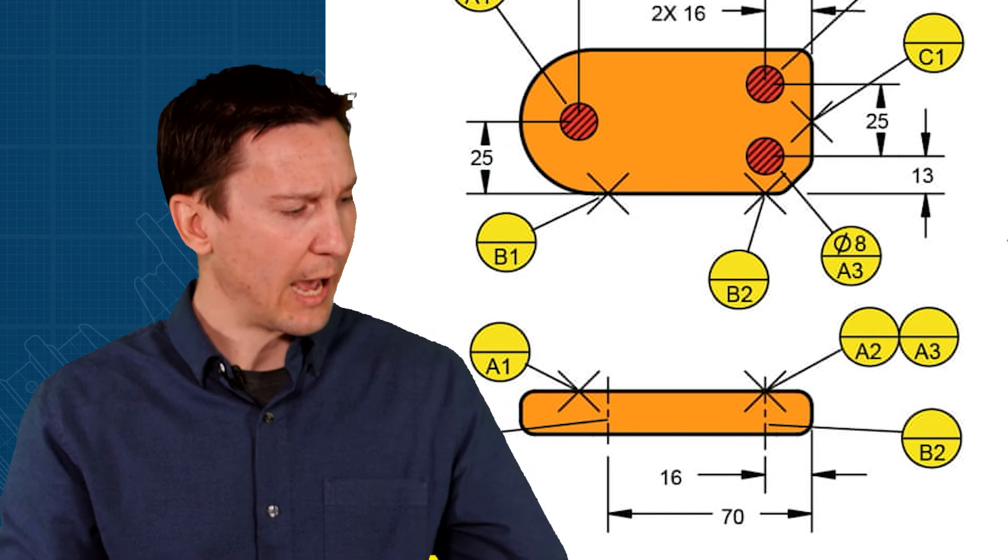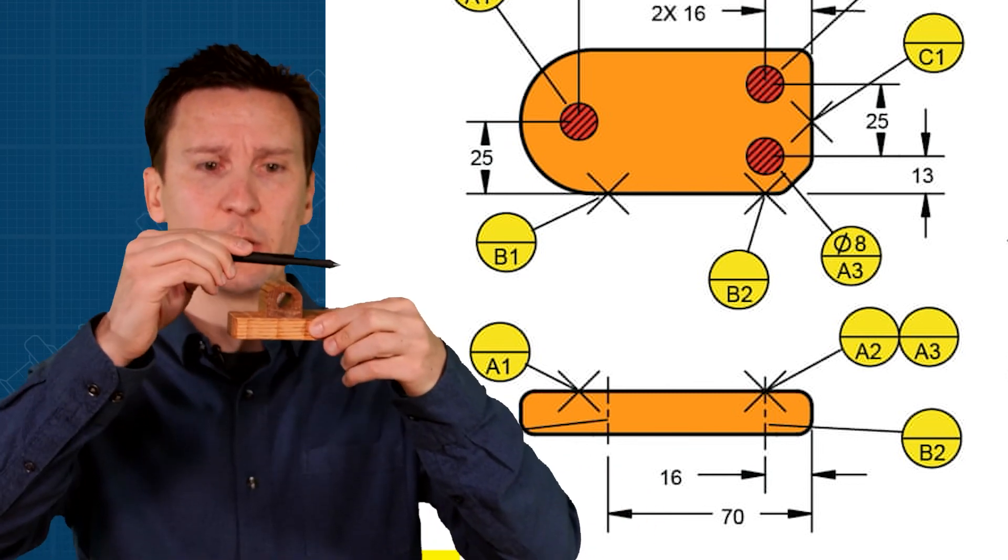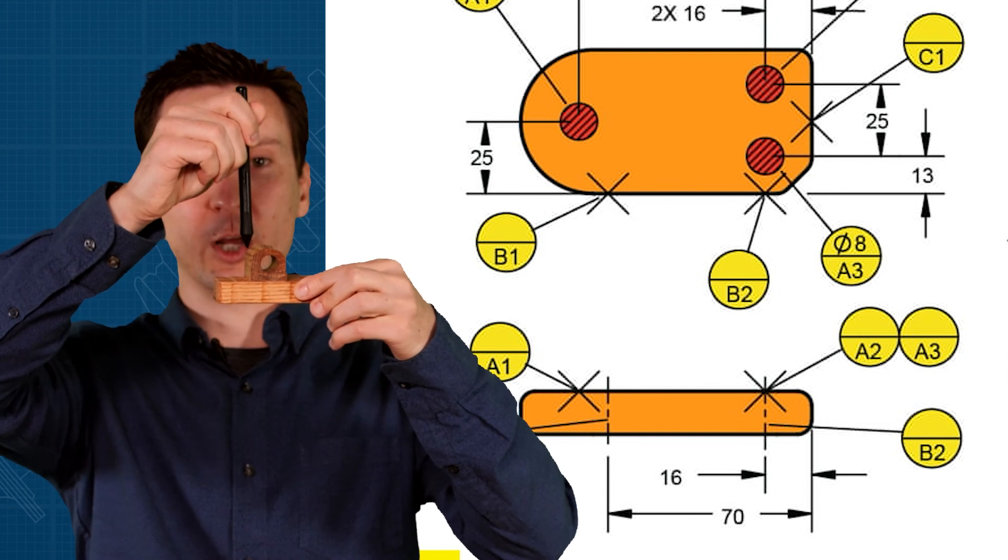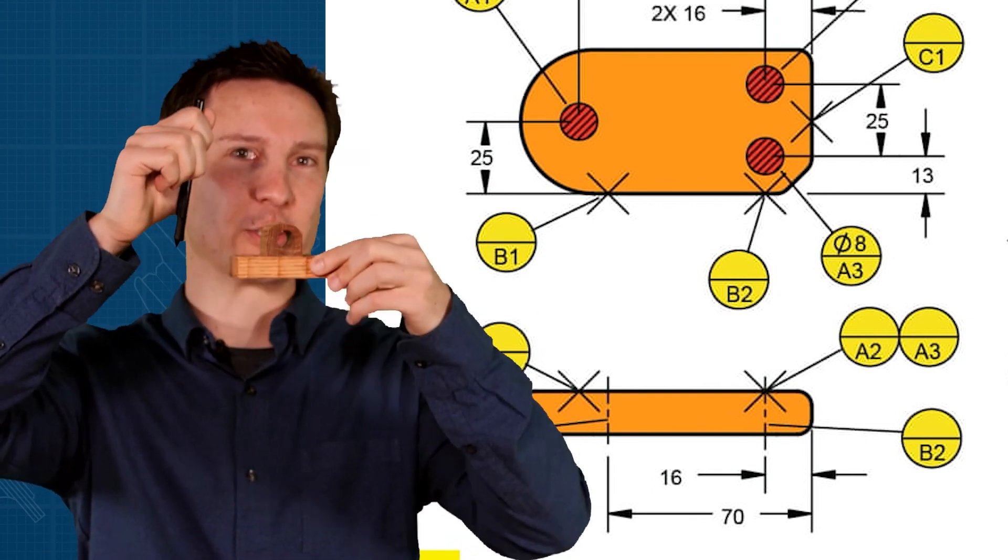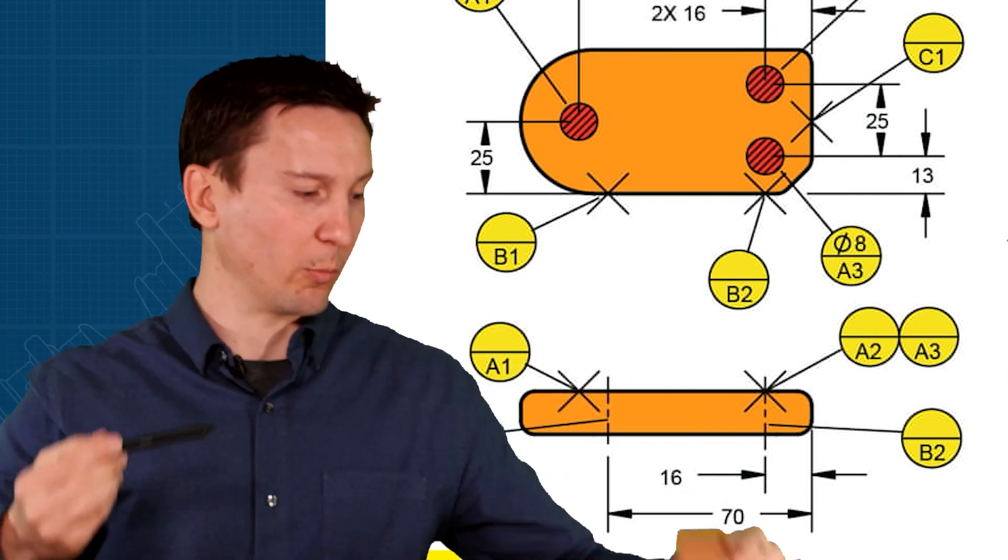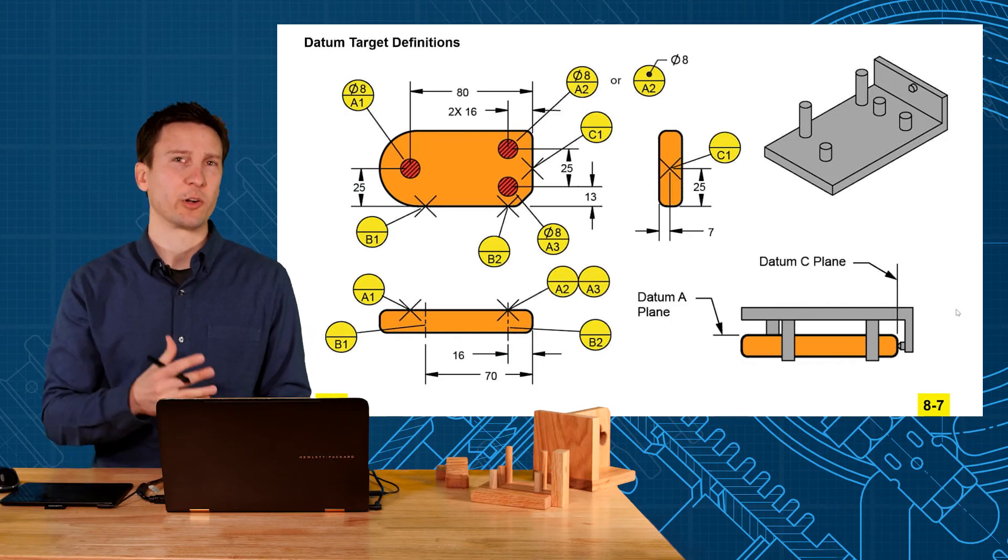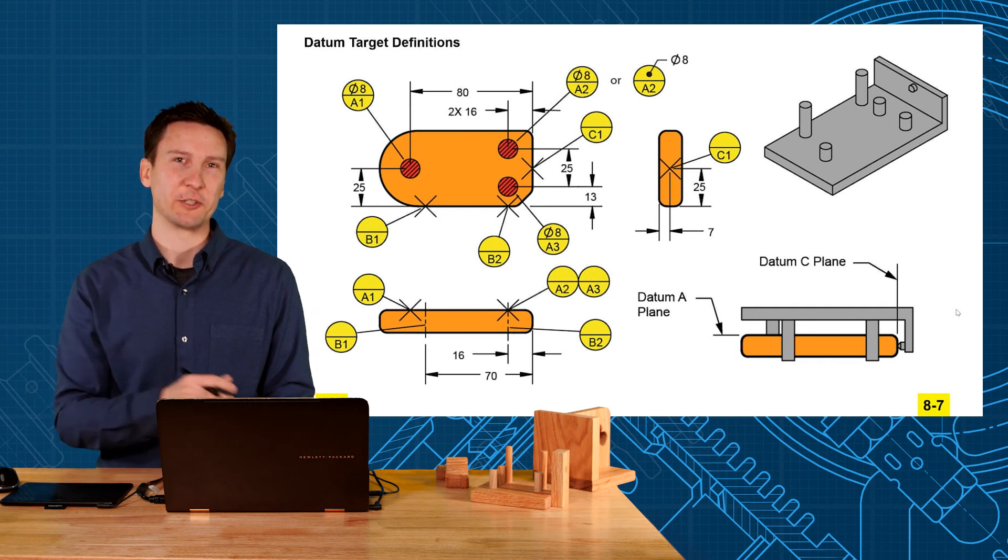Line contacts happen more on curved geometry. So when you have curved geometry we try to do a line contact because if you do a point you might fall off that tangent point and get a different z-direction up and down. So line contacts are more common on curved geometry. The next few videos will show how we're going to use these datum targets on more irregular geometries.